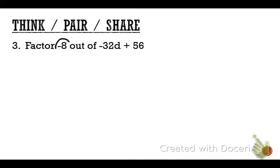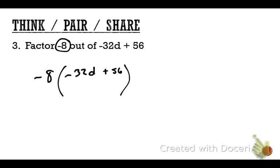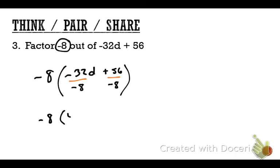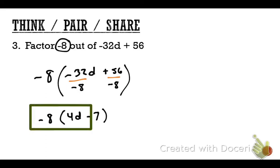Final problem: factor out negative 8. Put negative 8 outside the parentheses and divide every term by negative 8 — not just 8. A negative divided by a negative is positive, so the first term gives positive 4D. A positive divided by a negative is negative, so the next term gives negative 7. Your final answer is negative 8 times (4D − 7). And there's no homework for the weekend.